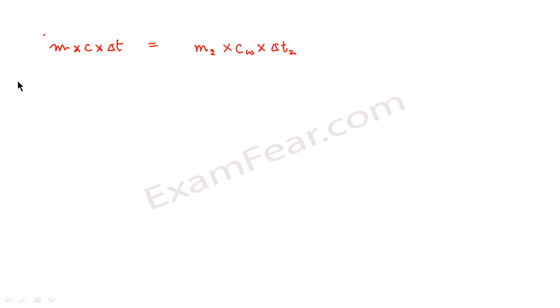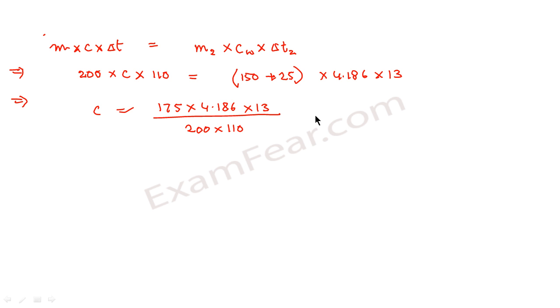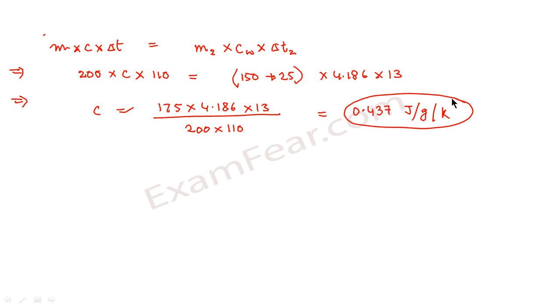Replacing the values: 200 into c into 110 equals (150 + 25) into 4.186 into 13. So c equals 175 into 4.186 into 13, divided by 200 into 110. This comes out to be 0.437 joule per gram per kelvin. So this is the specific heat of the metal.